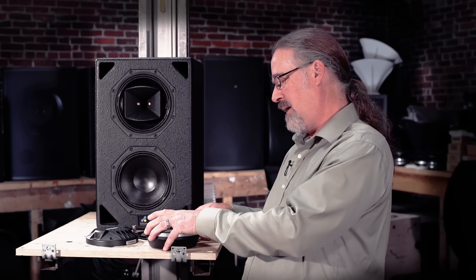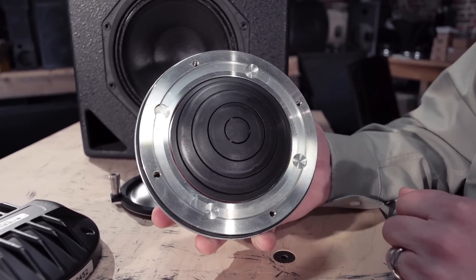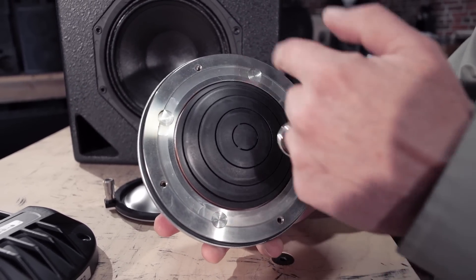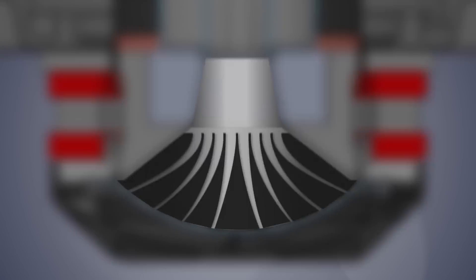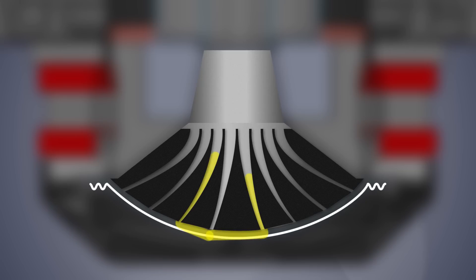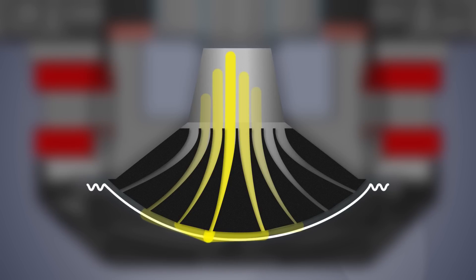To counteract that effect, you have a phase plug, which is what you see here, and it has concentric rings that are the paths for sound to get from the diaphragm to the horn throat. Theoretically, sound originating at any point on the dome will go into the first slot, but not all of it does. Some of it goes beyond the slot and into the next slot, and continues on like that.